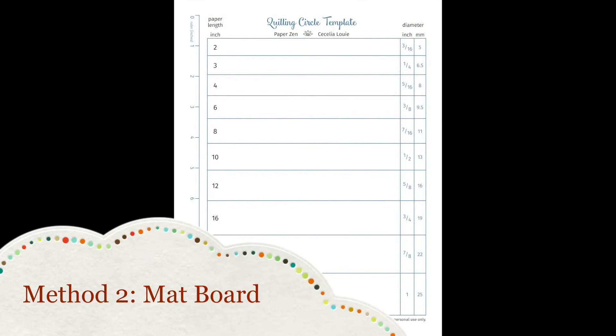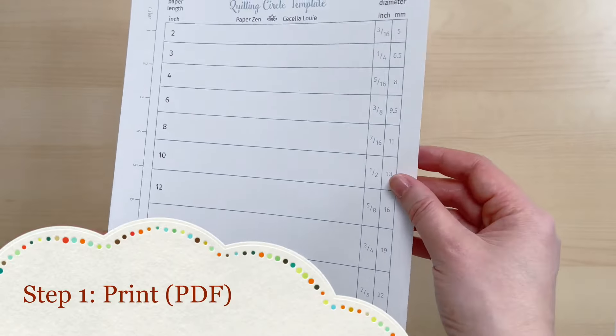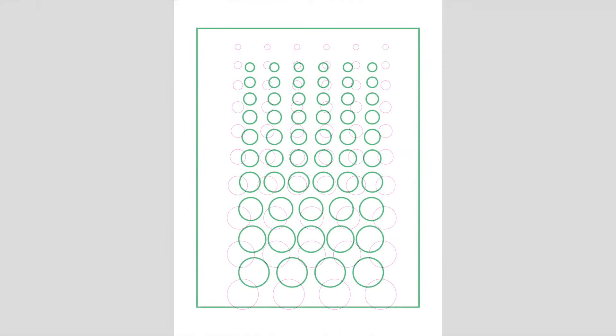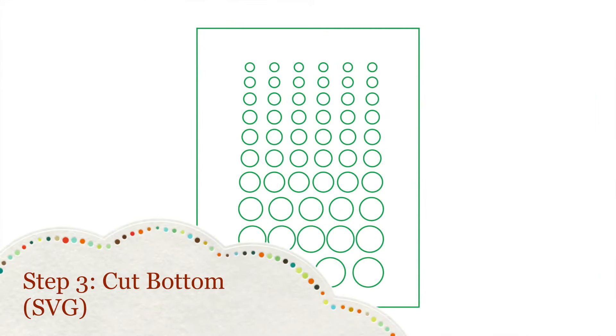Now for method two I'll show you how to make your template from matboard. Steps one and two are the same as shown in method one. Step three import the last file C cut bottom.